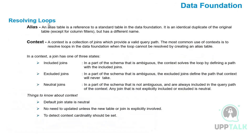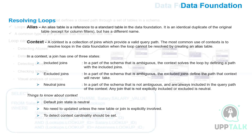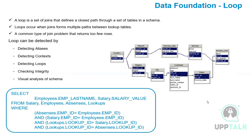We can resolve loops by two methods: creating an alias table, or creating a context. A context is a collection of joins that defines a valid query path. An alias means we create a copy of one table in the loop — for one path we use the alias table, and for the other path we use the original table, so the loop problem is resolved.